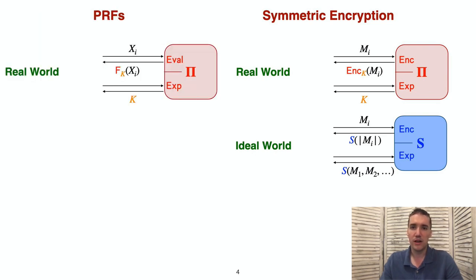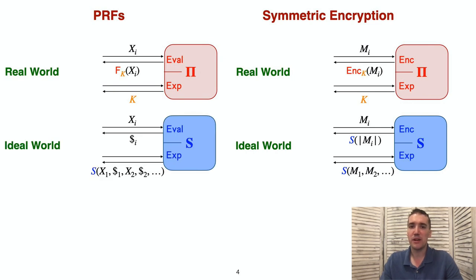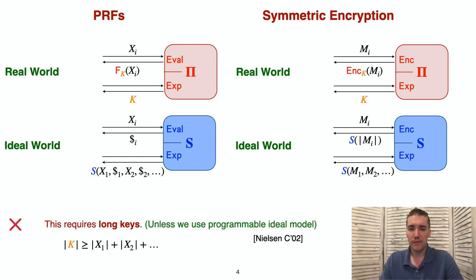Pseudo-random functions appear similarly. The attacker can ask for the function to be evaluated at chosen points, and then later ask for the underlying key to be exposed. In the ideal world, the responses to the evaluation queries are chosen randomly. As before, the techniques of Nielsen showed that such a PRF would necessarily need long keys or to use a programmable ideal model.